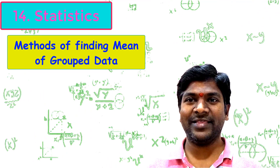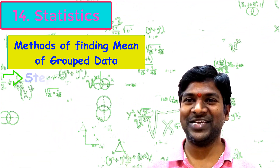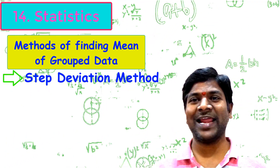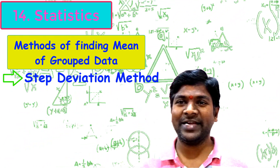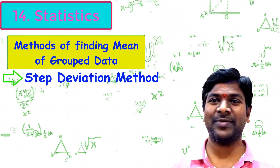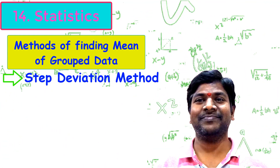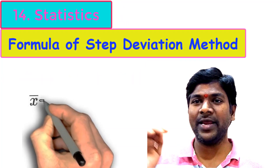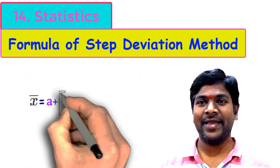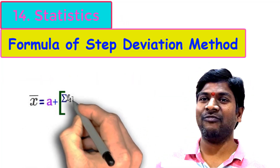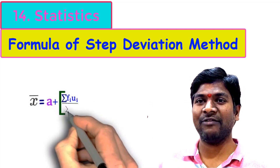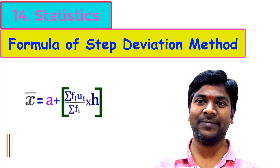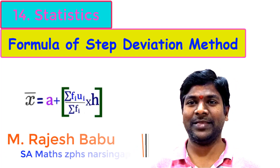Now let us see another method — the step deviation method — to find the arithmetic mean of classified data. The formula for mean using step deviation method is: x̄ = a + (Σfᵢuᵢ / Σfᵢ) × h. This is the formula to find the mean of classified data using the step deviation method.